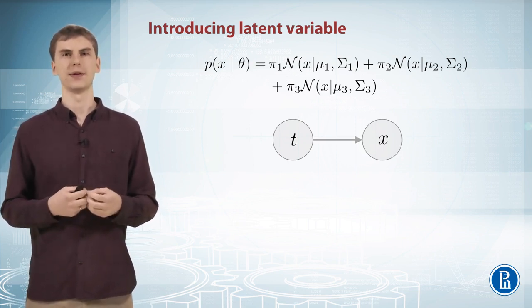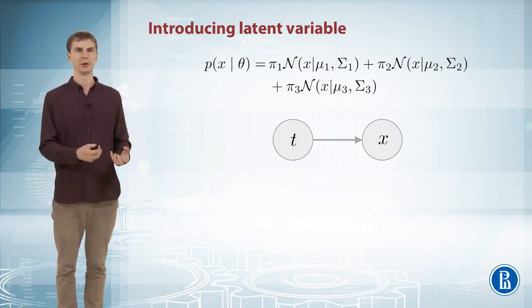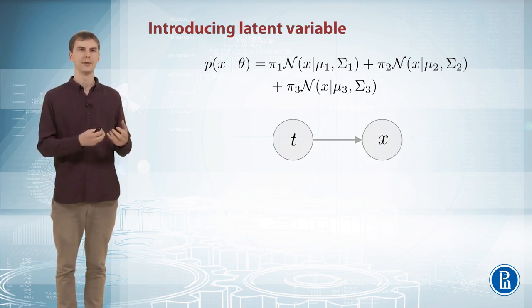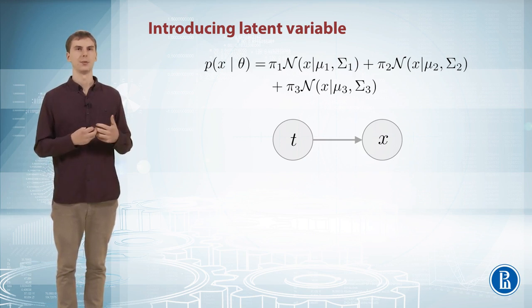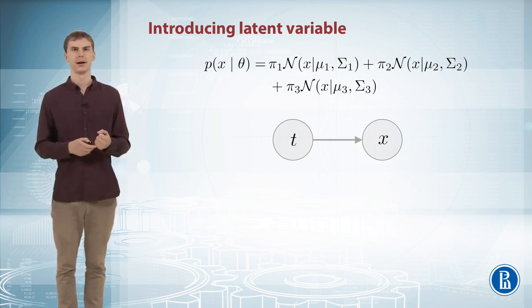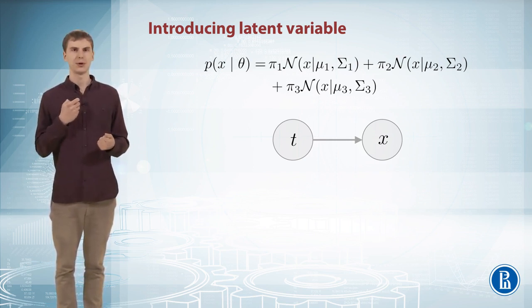This can be helpful. If we know the latent variables, it can help us understand something about our model. After we fit the Gaussian mixture model to our data, we may find the distribution on the latent variable given the data. We may ask our model: what is the value of the latent variable t for this particular data point? The answer to this question will basically be the clustering — it gives us the belief about which Gaussian this data point came from. It is reasonable to assume that the latent variable t has prior distribution pi, which is exactly the weights of our Gaussians.